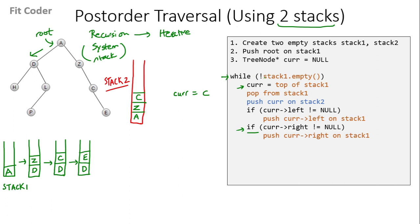We again come in the while loop — stack1 is not empty. Current becomes equal to the top of stack1, which is E. We pop from stack1 and push current onto stack2. We check the left of E, which is null, and the right of E is also null, so these two if conditions are false.